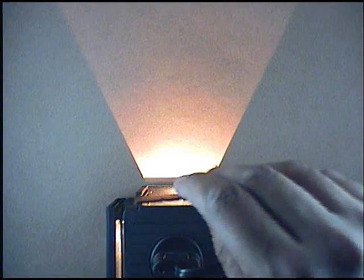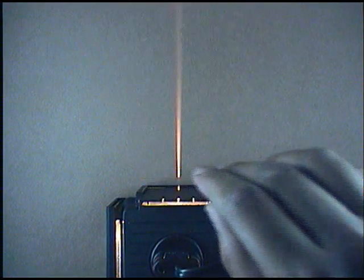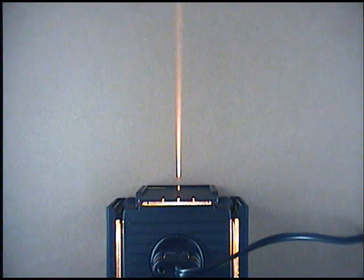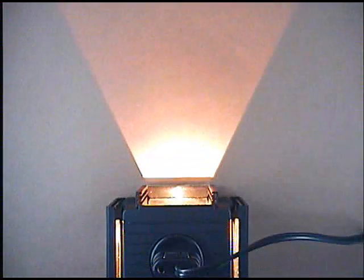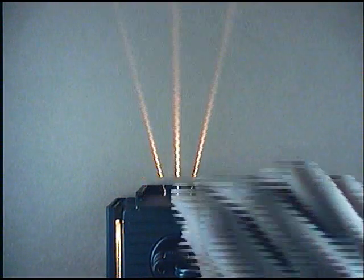We can demonstrate how light travels in straight lines by using a simple ray box and piece of cardboard with slits in it. You'll be able to see one ray of light there, and if you were to use one with three slits, you'd be able to see three rays of light.